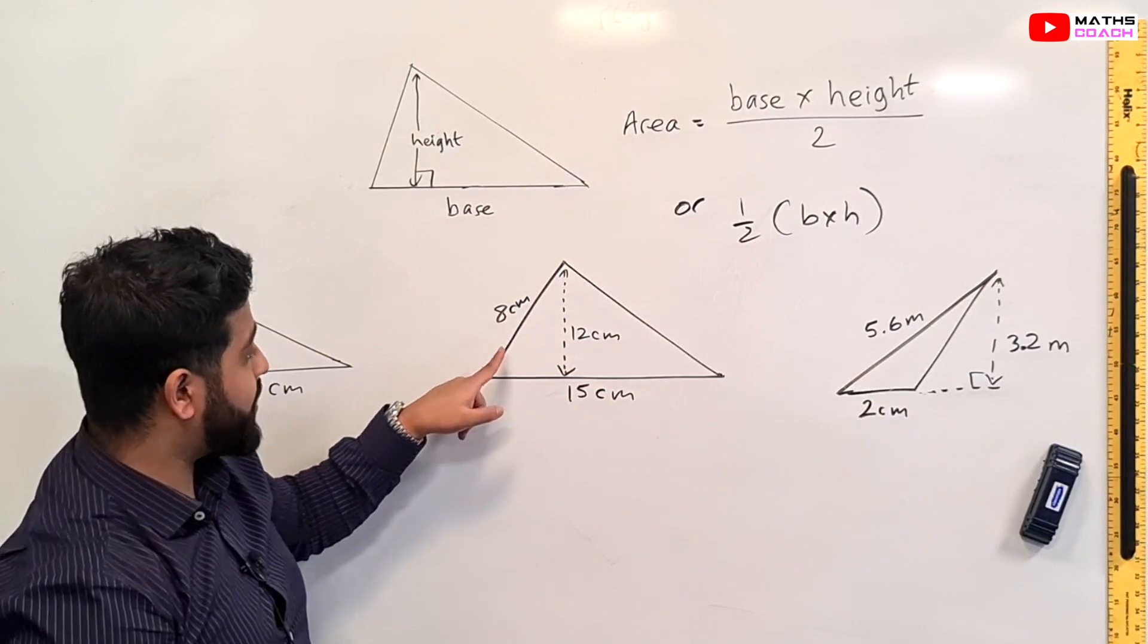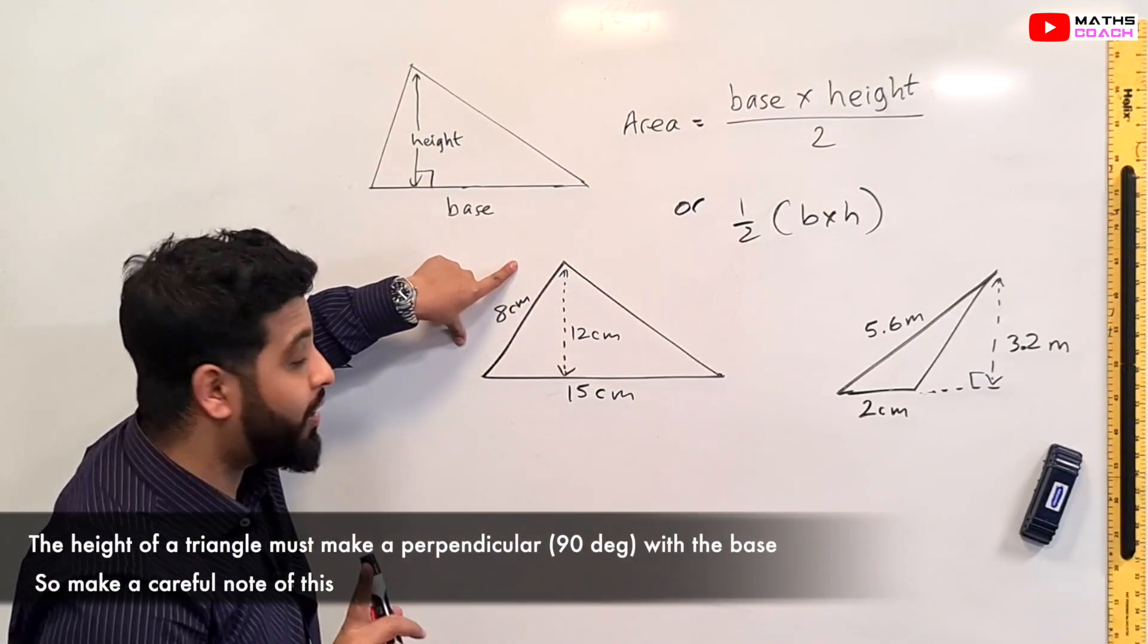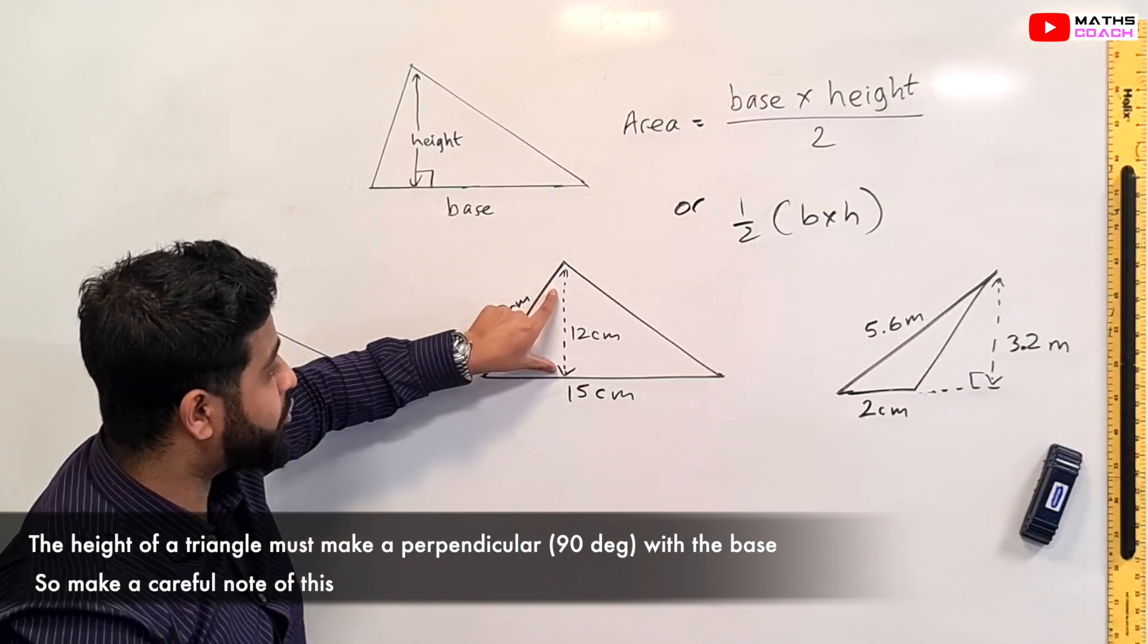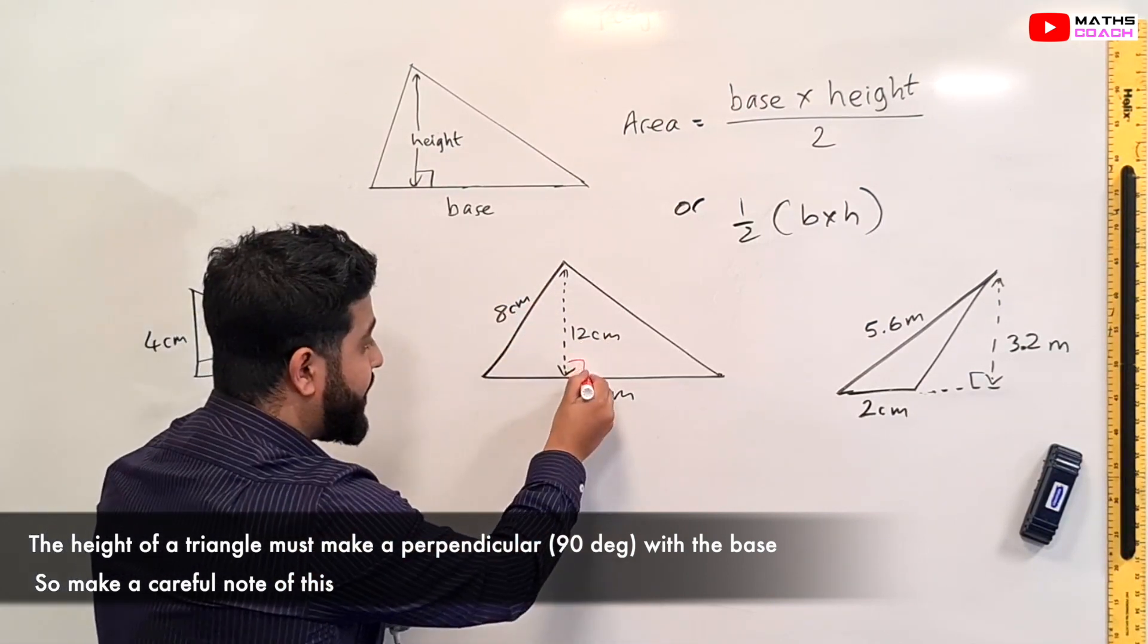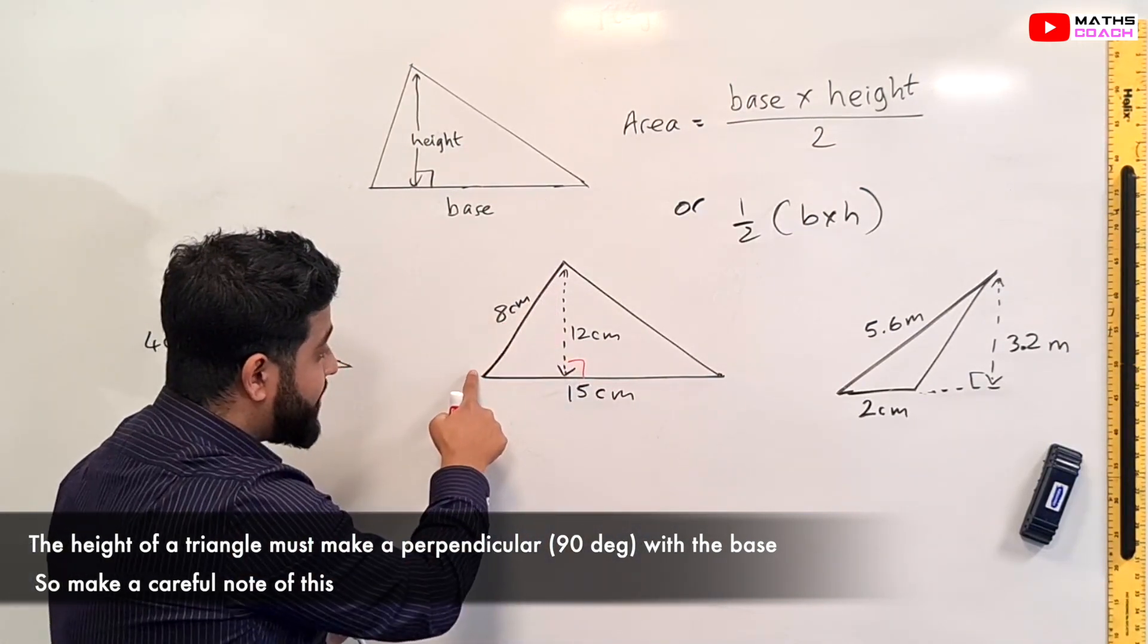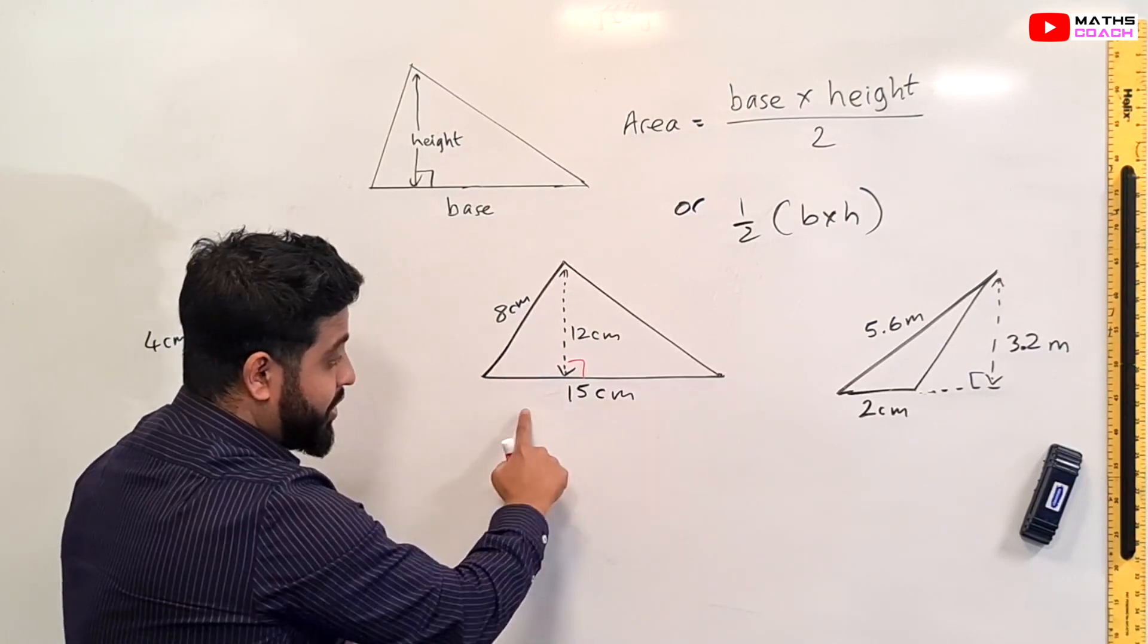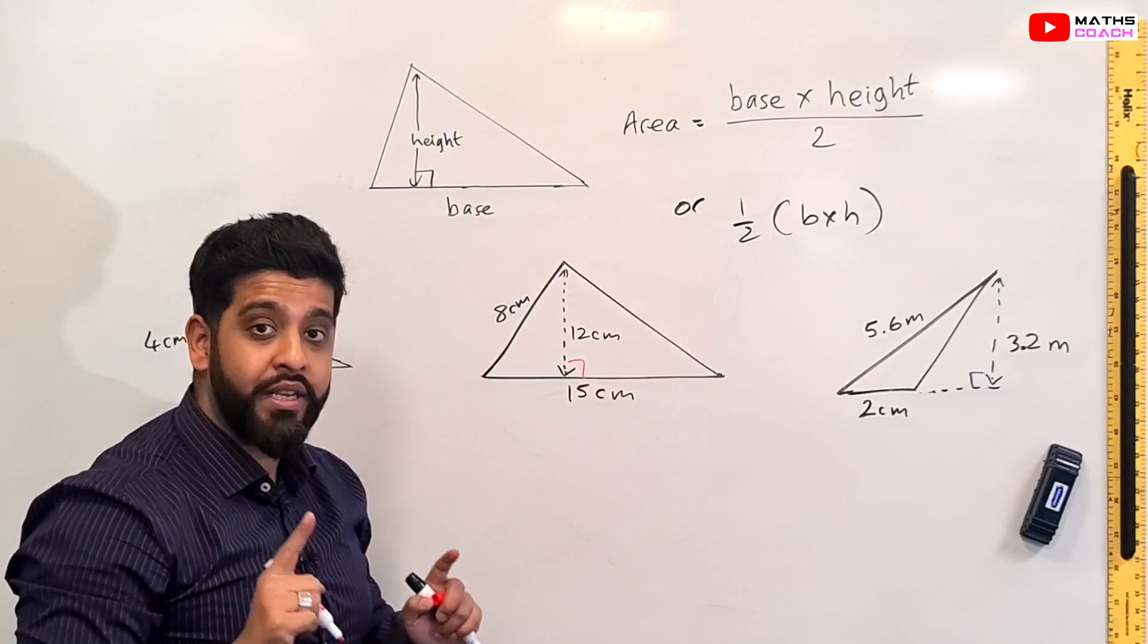For example here onto this question you can see that this is 8 centimeters but this 8 centimeters is not the height of this triangle. The height of this triangle is this 12 centimeters which makes a 90 degree right angle with the base. This is very important. The 8 centimeters here and the 15 centimeters which is the base here don't have a right angle between them. Make a note of that.